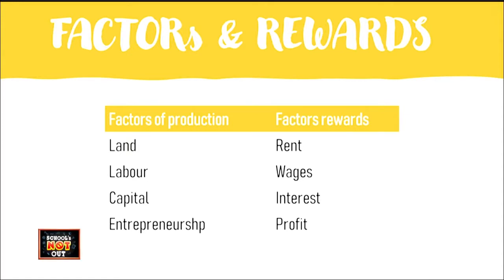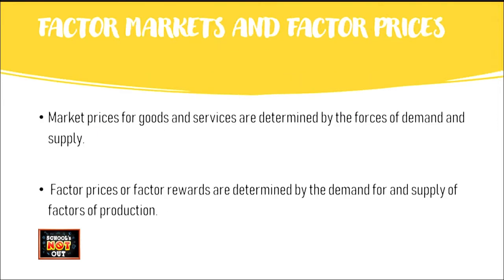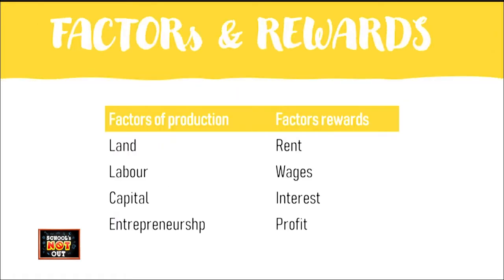The factors of production are land, labour, capital, and entrepreneurship — sometimes referred to as enterprise. The factor rewards include rent, wages, interest, and profit. For land, the reward is rent; for capital, the reward is interest; for labour, the reward is wages. So it simply means that someone who supplies their labour is paid wages.